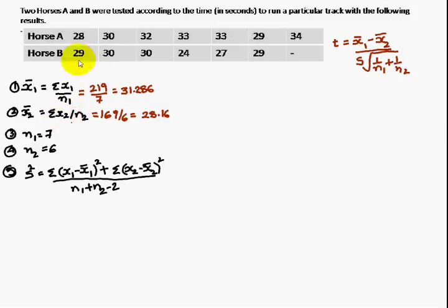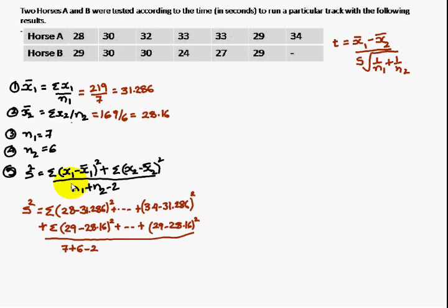Similarly, sigma x2, add these entire values, you are going to get 169 divided with the number of values 6, you are going to get it as 28.16.